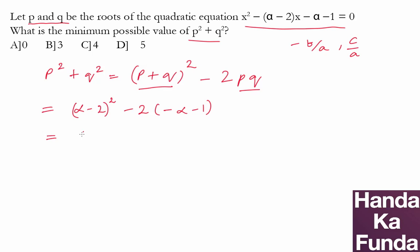Let us calculate this. So this is alpha square minus 4 alpha plus 4 plus 2 alpha and plus 2, which makes alpha square minus 4 alpha